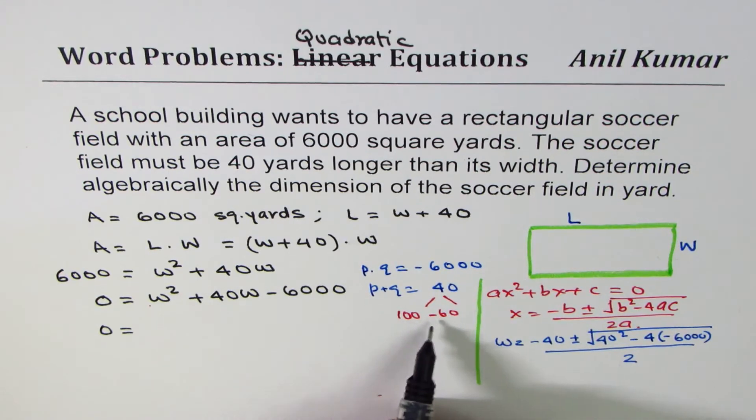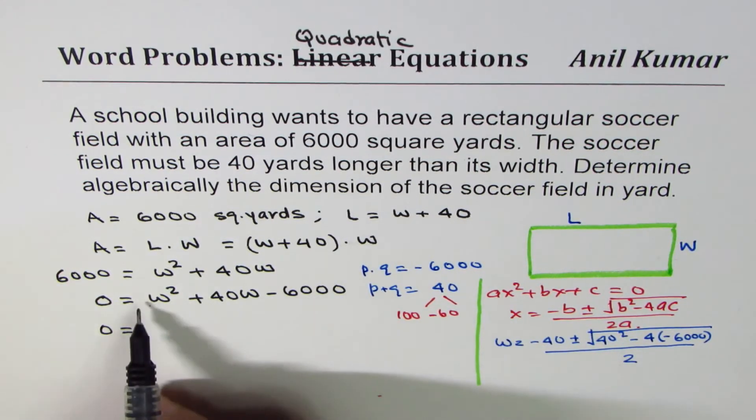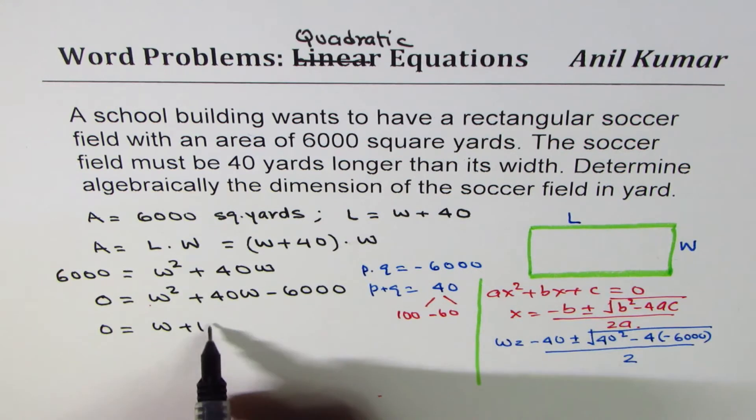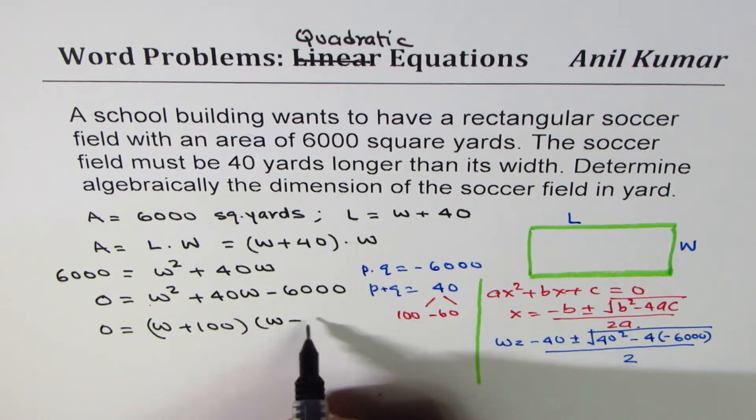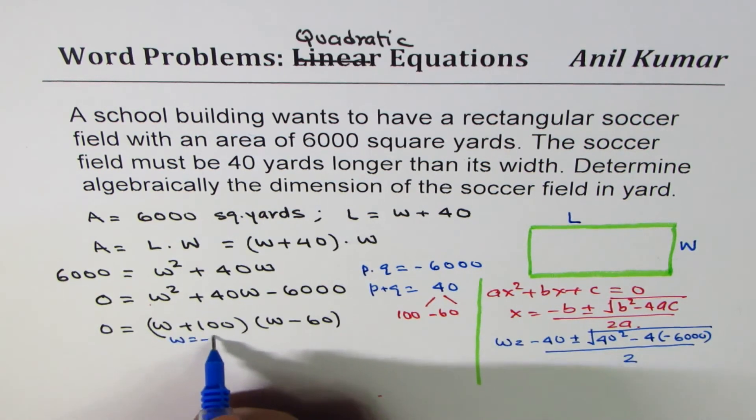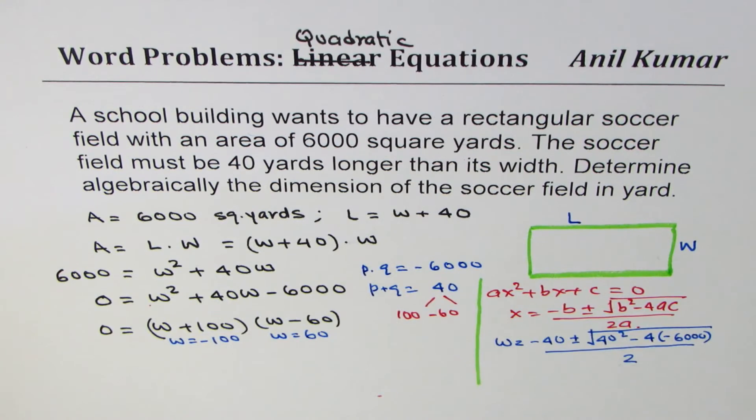So we could write this as (W plus 100) times (W minus 60). That gives us two solutions: W equals minus 100 or W equals 60. Now as you know, minus 100 is not valid, so this is not valid.